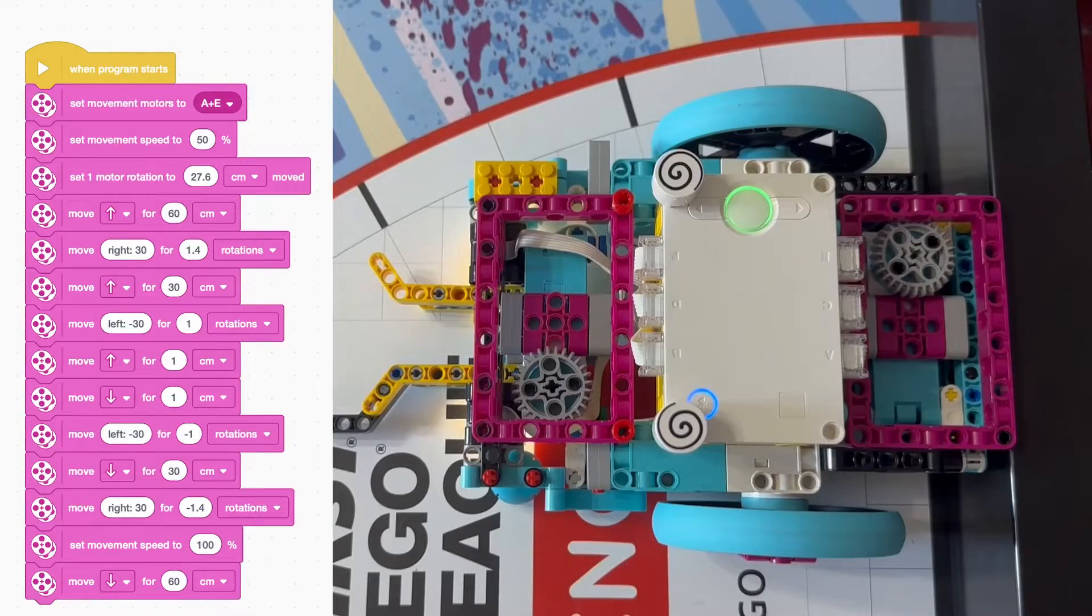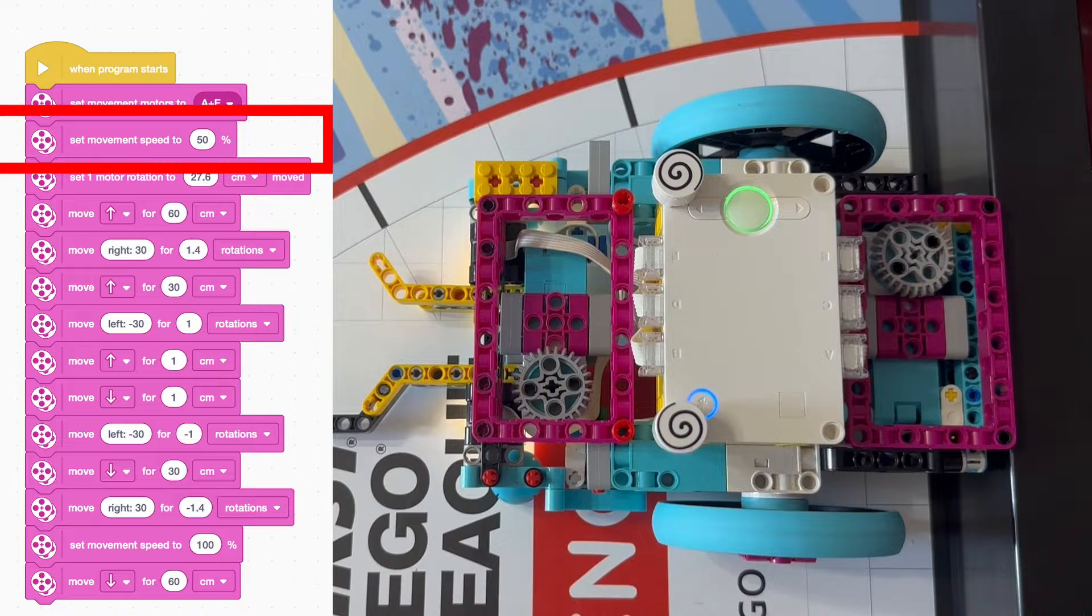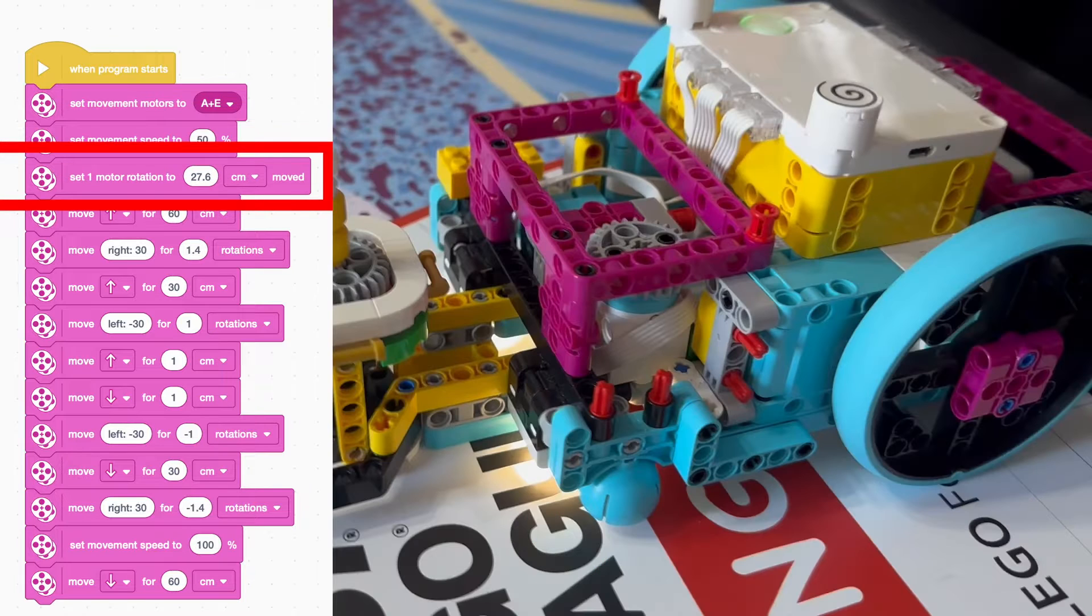Next, we'll show you how we programmed our robot for this mission. We first set the movement motors to A and E so that the hub or brain of the robot knew which motors to move. We then set our movement speed to 50% for more accuracy because the robot moves really fast at 100%. We also put a block in to specify that our wheels are 26.7cm in circumference. This means that if our robot's wheels turn a whole rotation, the robot will have gone 27.6cm.